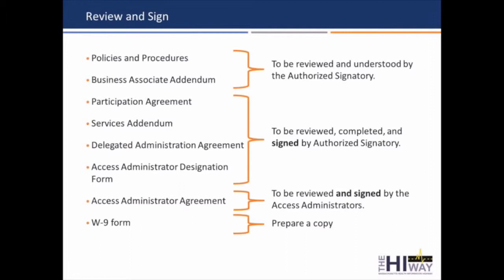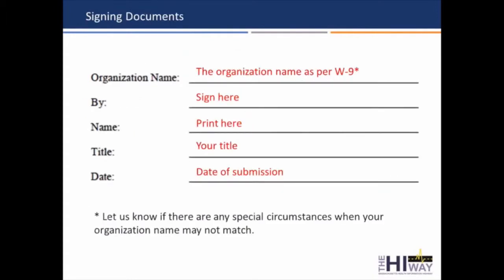Here's everything that needs to be reviewed and signed. We need two of the access administrator agreement forms. Here's what the signature page looks like — there's been a little bit of confusion on it. For the organization name, it's best if it matches your W-9 or articles of incorporation. There are some circumstances where that might not be the case, so just let us know on the agreement, because it will add time onto the verification process if we're not clear on that up front.